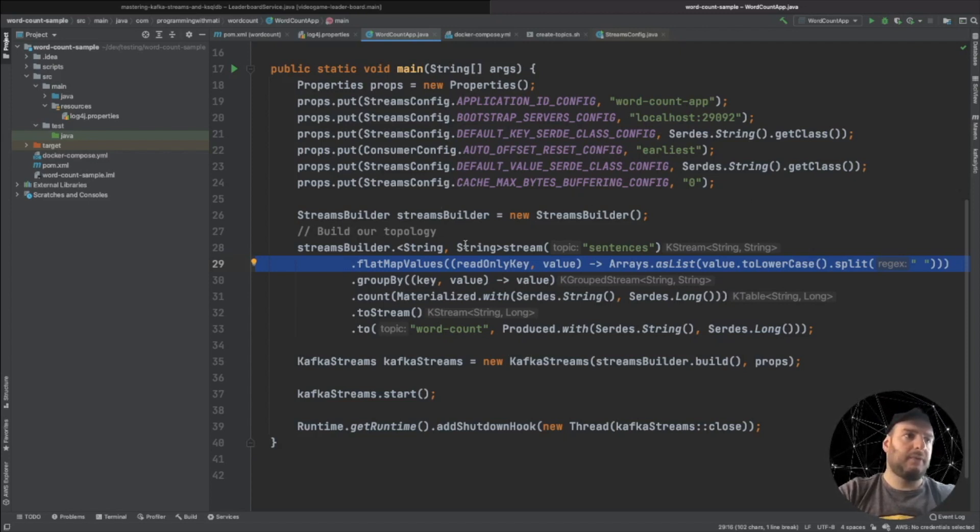Here's how we use the flat map values in our word count tutorial. As you remember, we were reading a stream of sentences. And here we are splitting it into multiple words by applying the string split operation. We also applied a to lowercase method so that we could count words with different cases. Then we grouped them by the value, which was the word. And finally, we counted the appearances of that word.